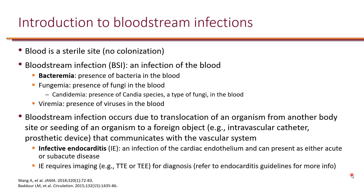Blood is a sterile site. There is no such thing as colonization of the blood. Any organism in the blood is referred to as a bloodstream infection. Bacteremia specifically means presence of bacteria in the blood, whereas fungemia means the presence of fungi in the blood, and viremia means presence of viruses in the blood.